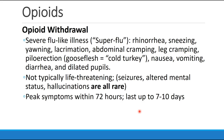Opioid withdrawal occurs when a patient who is dependent upon opioids no longer receives them. This presents as a severe flu-like illness, sometimes called the superflu. Patients have a runny nose, sneezing, yawning, lacrimation, abdominal cramping, leg cramping, piloerection or goose flesh — which is probably the source of the term quitting something cold turkey — nausea, vomiting, diarrhea, and dilated pupils. In general, opioid withdrawal is not typically life-threatening. Dangerous effects like seizures, altered mental status, and hallucinations are all rare. The worst symptoms occur within 72 hours after the opioid is stopped, but symptoms can persist for up to 7 to 10 days.